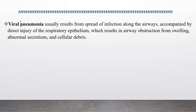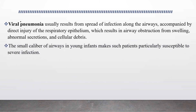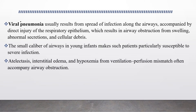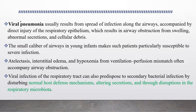Viral pneumonia results from spread of infection along the lower airways accompanied by direct injury of the respiratory epithelium, which results in airway narrowing from swelling, abnormal mucus secretion, and cellular debris. The small caliber of airways in young infants makes such patients particularly susceptible to severe infection, atelectasis, interstitial edema, and hypoxemia from ventilation-perfusion mismatch. Viral infections of the respiratory tract can also predispose to secondary bacterial infection by disturbing normal host defense mechanisms and disrupting the respiratory microbiota.